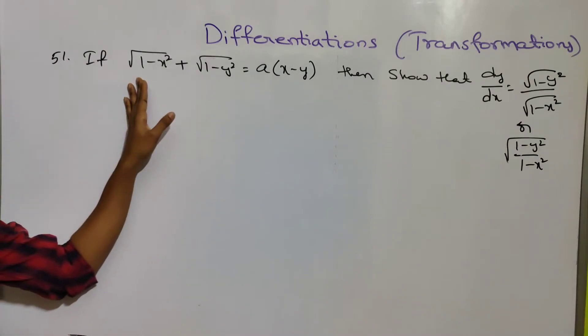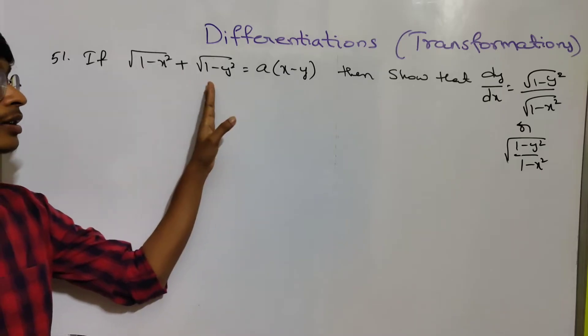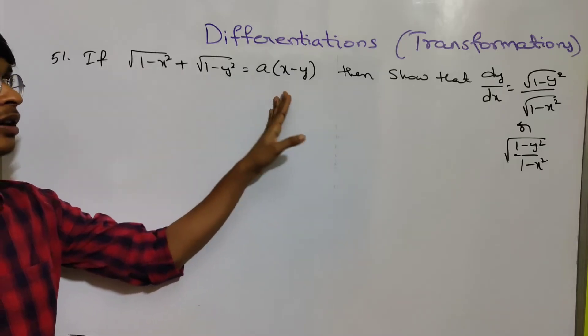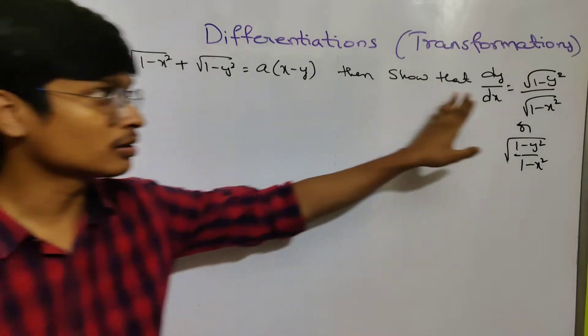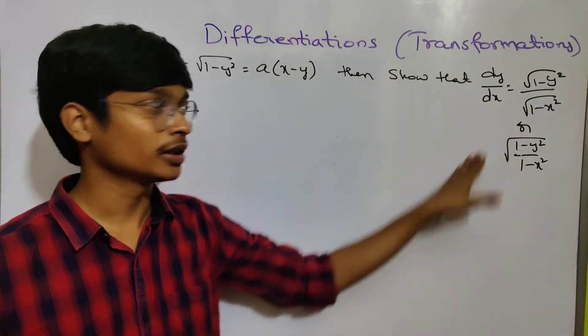If √(1 - x²) + √(1 - y²) = a(x - y), then show that dy/dx equals something. We need to solve this problem.